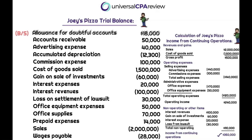Starting with allowance for doubtful accounts — this is a contra asset reported on the balance sheet. Accounts receivable is a current asset; the allowance nets the total receivables against the amount we expect not to collect. Both go to the balance sheet and are ignored for income statement purposes. Advertising expense is treated as a selling expense within SG&A — it belongs in the operating section. Accumulated depreciation is another contra asset on the balance sheet, representing the collective depreciation that has accumulated — not on the income statement.